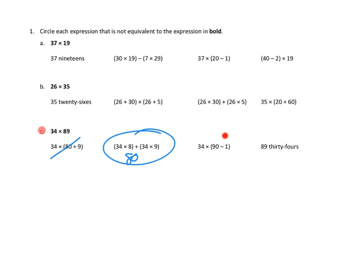Let's take a look at the next one. We've got 34 times 90 minus 1. Well, 90 minus 1 would be 89. And that's what we have here. So I think we're okay. I'm going to go ahead and do a big scratch through that. This is the same as 34 times 89. It's just 89 is expressed in a different way.